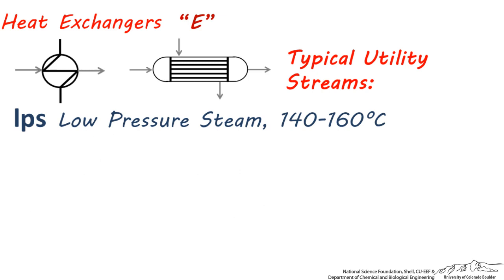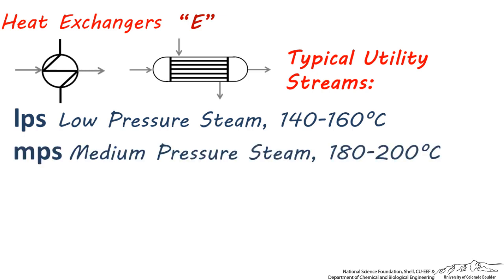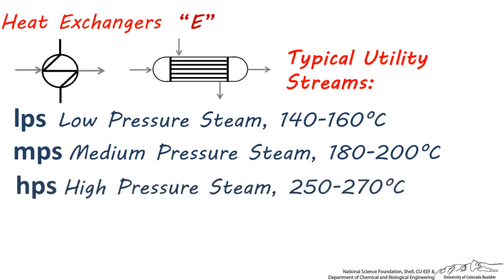Low pressure steam, abbreviated LPS, which is saturated steam around 140 to 160 degrees centigrade going into the heat exchanger. Medium pressure steam, abbreviated MPS, which is saturated steam around 180 to 200 degrees centigrade going into the heat exchanger. High pressure steam, abbreviated HPS, which is saturated steam around 250 to 270 degrees centigrade going into the heat exchanger.